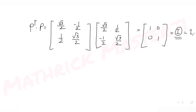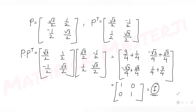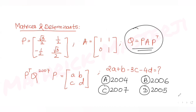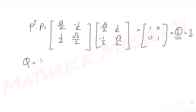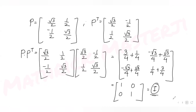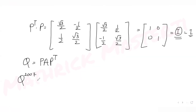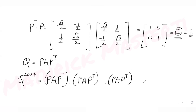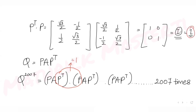Since Q = P·A·Pᵀ, we want Q^2007. Multiplying Q with itself 2007 times gives P·A·Pᵀ repeated 2007 times. Between consecutive terms, we get Pᵀ·P which equals the identity matrix I, so those cancel out.